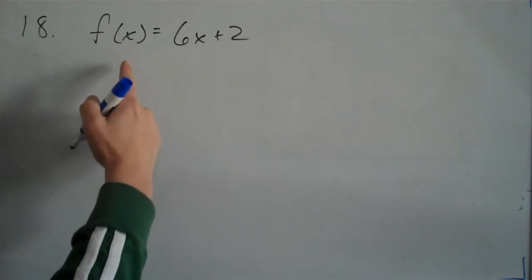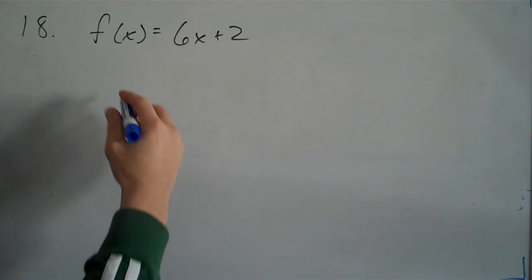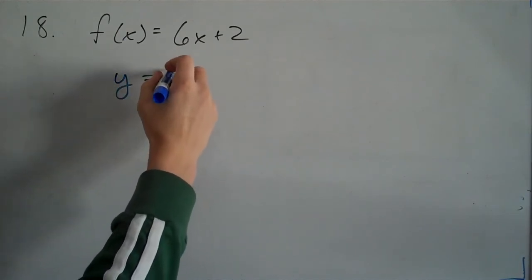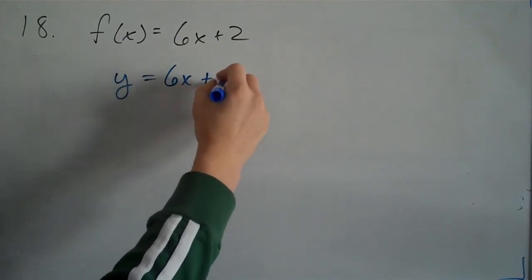The first thing I'm going to do is find the inverse of f of x equals 6x plus 2. This is y equals 6x plus 2, written differently.